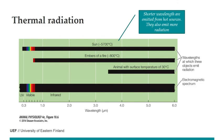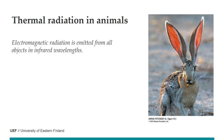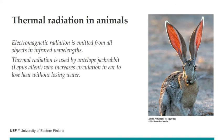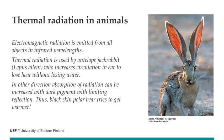All objects emit electromagnetic radiation in the infrared wavelengths. This can be seen in the jackrabbit, where increased circulation in the ears is visible — blood vessels carry heat to the ears to lose heat without losing water, so this has nothing to do with evaporation. Radiation also works in the other direction: we can absorb radiation, and absorption can be increased with dark pigment by limiting reflection. That is why the polar bear has black skin — to help it get warmer.